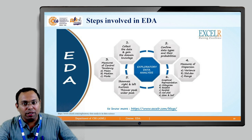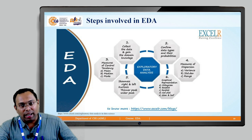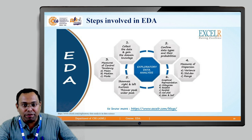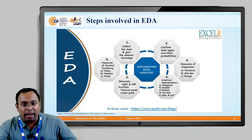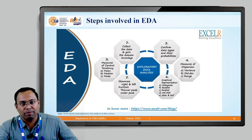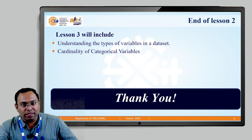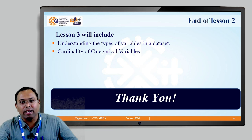The bottom line: firstly collect the data; second, understand the data; third, use statistical operations like mean, median, and mode; fourth, understand the data in more depth and find relationships between variables; fifth, check whether the data has skewness or a normal standard distribution; and lastly, draw graphical representations. With this we end Lesson 2. In Lesson 3 we will cover understanding the types of variables in a dataset and finding the cardinality of categorical variables. Thank you.